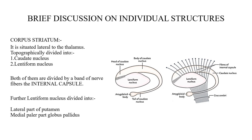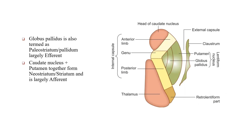Now, a brief discussion on individual structures, starting with the corpus striatum. The corpus striatum is situated lateral to the thalamus and is topographically divided into the caudate nucleus and the lentiform nucleus. The lentiform nucleus is the larger one, and the caudate nucleus is S-shaped. Both are divided by a band of nerve fibers called the internal capsule. The lentiform nucleus is divided into the lateral putamen and the medial pallor part — the globus pallidus. Importantly, the lentiform nucleus is not a distinct structure; it is formed by the putamen and globus pallidus together.